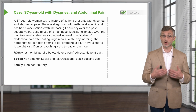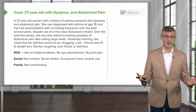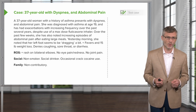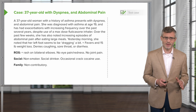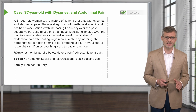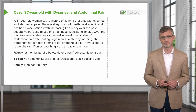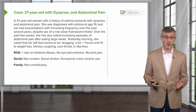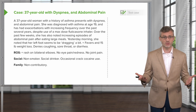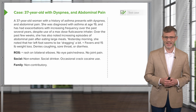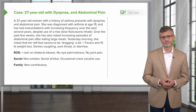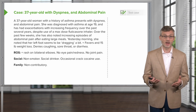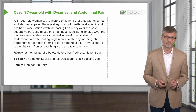On Review of Systems, we also find that she's reporting a rash on both of her elbows. No eye pain, no redness, no joint pain. She's a non-smoker, drinks socially, and occasionally uses crack cocaine. Family history is non-contributory.